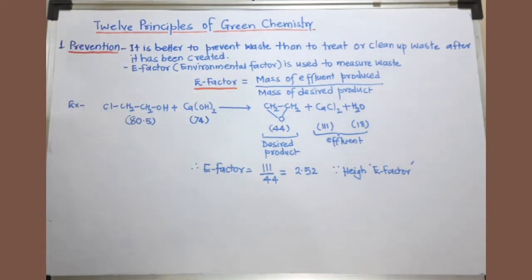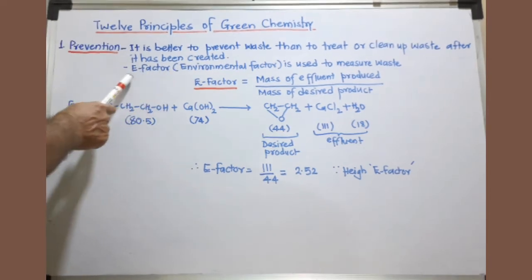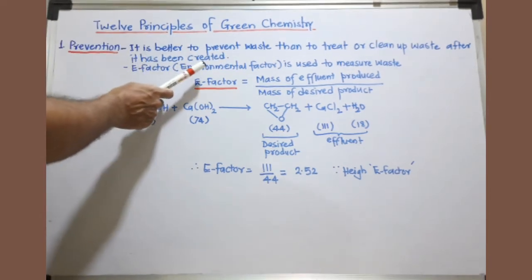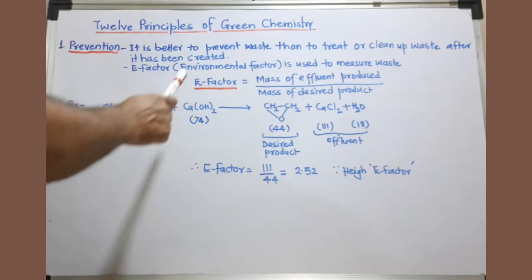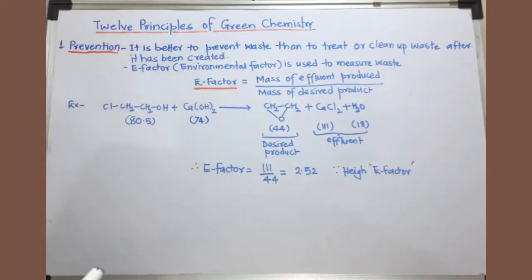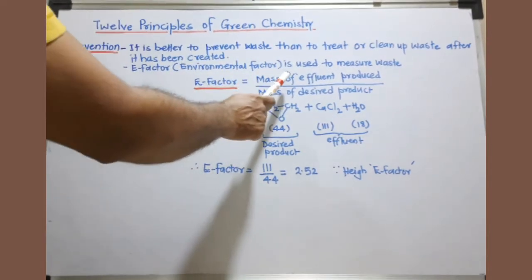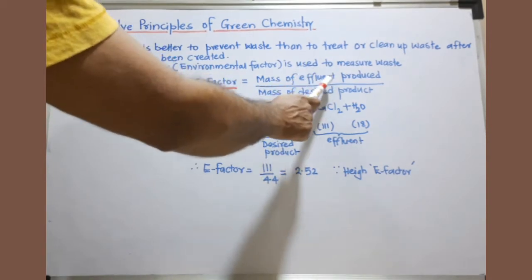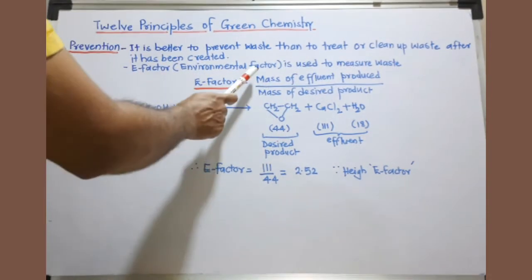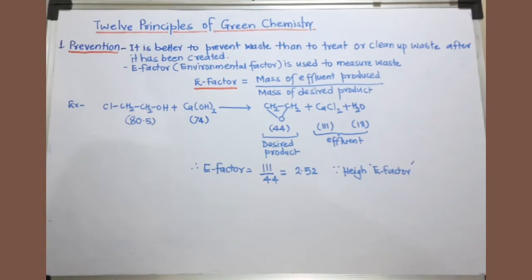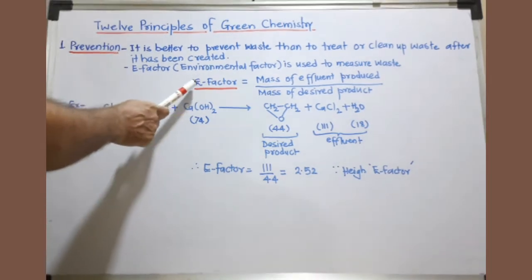When discussing the first principle of green chemistry — prevention of waste — one factor is introduced: the E factor, or environmental factor. By using this environmental factor, we measure the waste produced in a chemical reaction. The formula is: E factor = mass of effluent (mass of waste produced) divided by mass of the desired product.